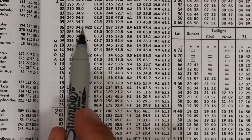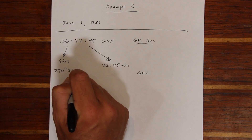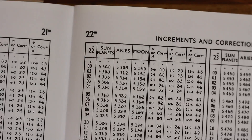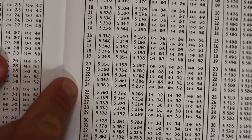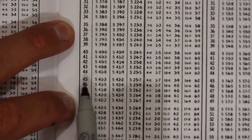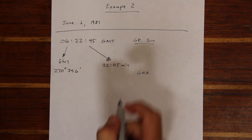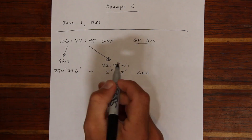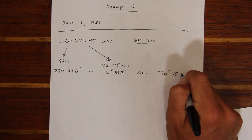We add that to the first column. We still have to account for the 22 minutes and 45 seconds, so in the increments and corrections pages we open to 22 minutes, scroll down to the 45-second point, and look at the value next to it — which is the correction for Greenwich Hour Angle for the sun. In this case it's 5 degrees 41.3 minutes. Now that we have all the figures, we add them together and come up with a total GHA of 276 degrees and 15.9 minutes.